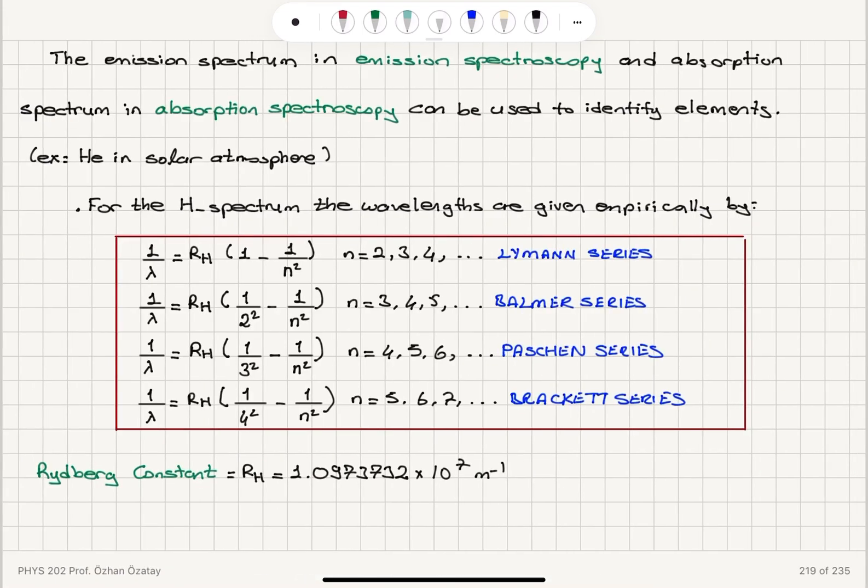For the case of hydrogen, we have Lyman, Balmer, Paschen, and Brackett series for transitions to n equals 1, n equals 2, n equals 3, and n equals 4. All of these are given empirically by this equation: 1 over the wavelength of the emitted light is Rydberg's constant times 1 over n final squared minus 1 over n initial squared. So n final is 1 here, 2 here, 3 here, and 4 here.